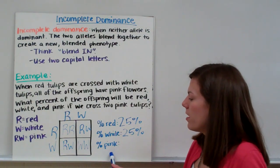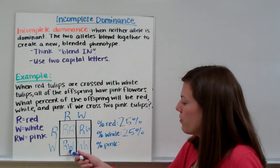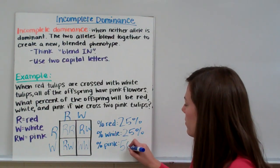Finally, we're asked for what percent are going to be pink. We have two R, W, so two pink flowers. Two out of four is 50%.